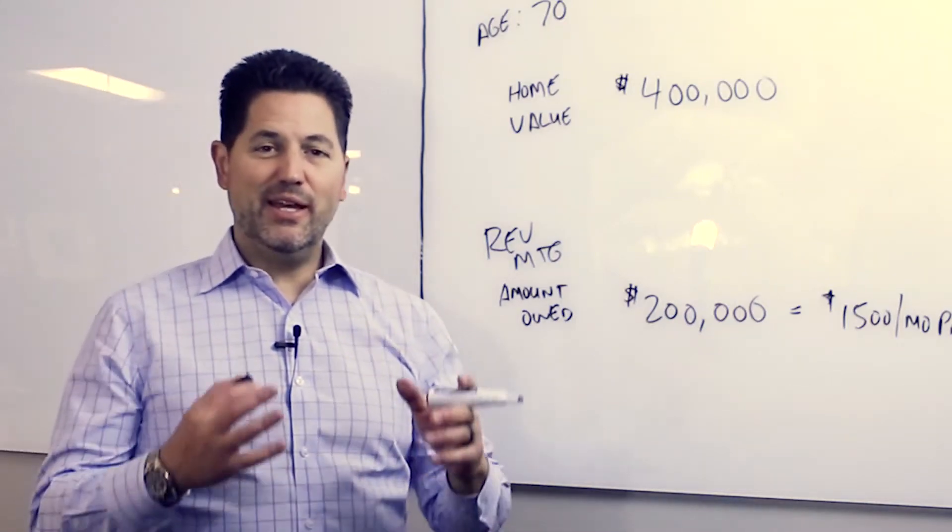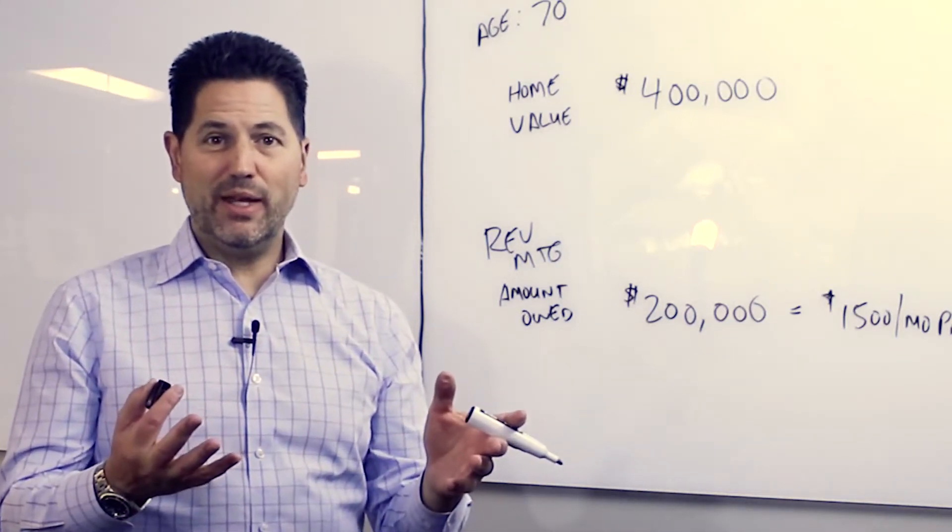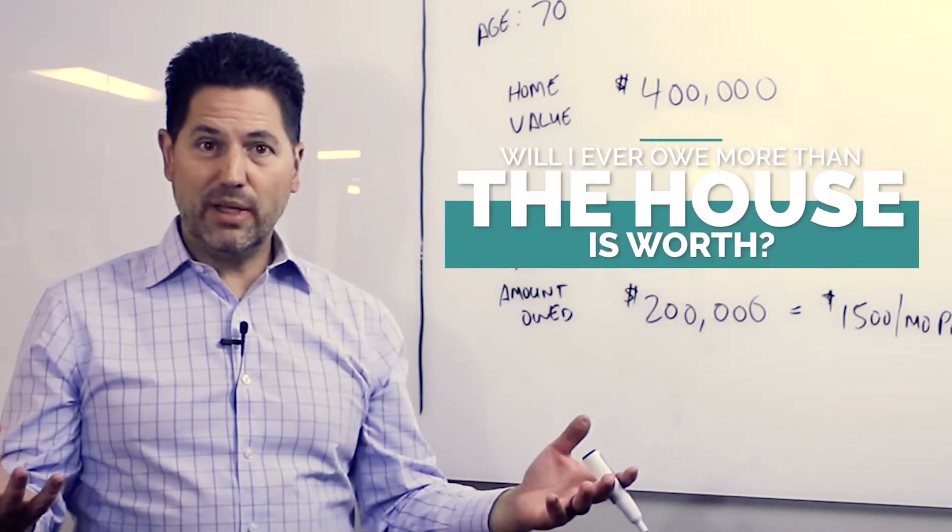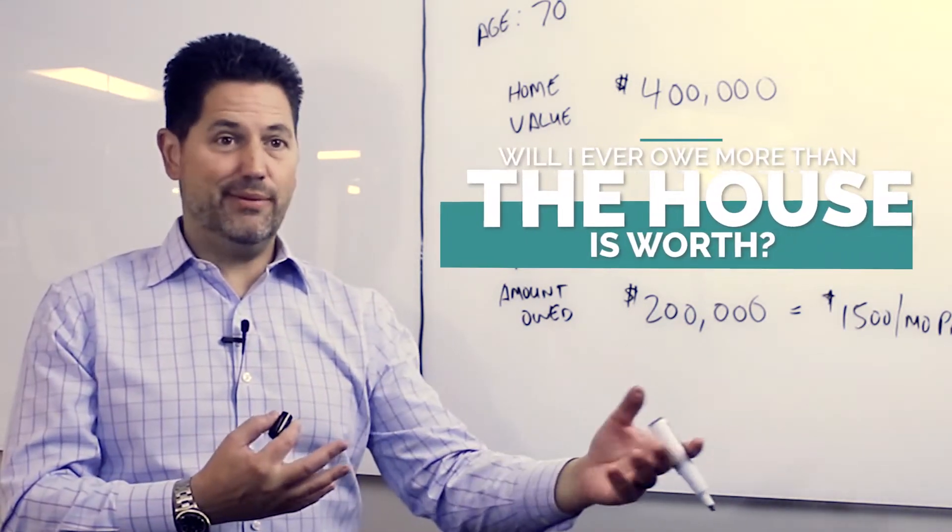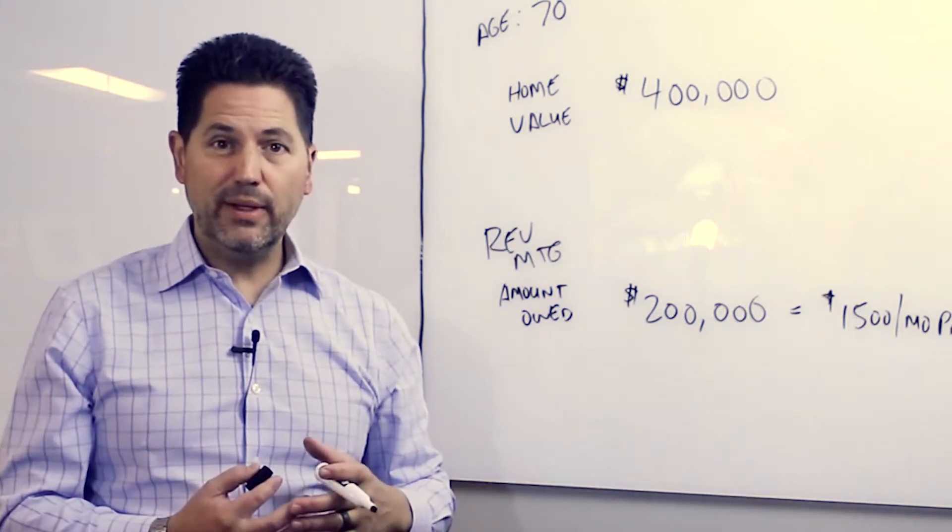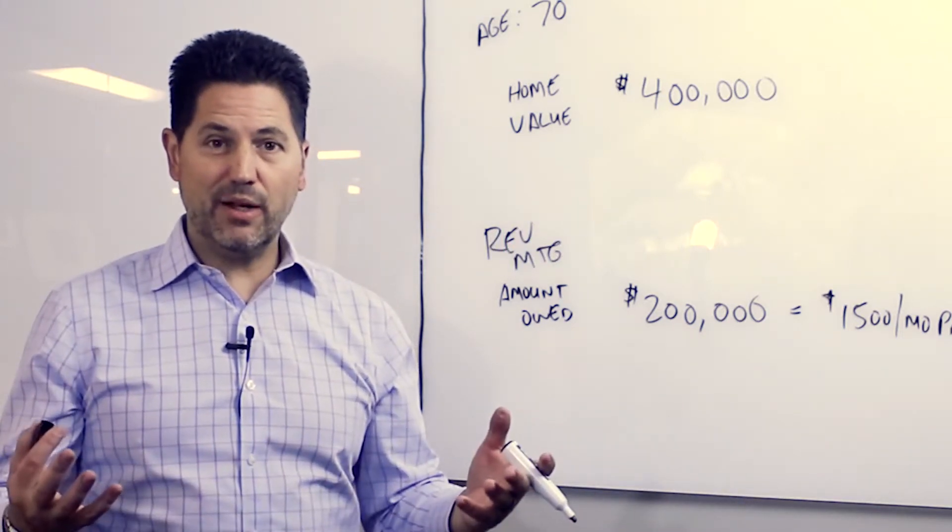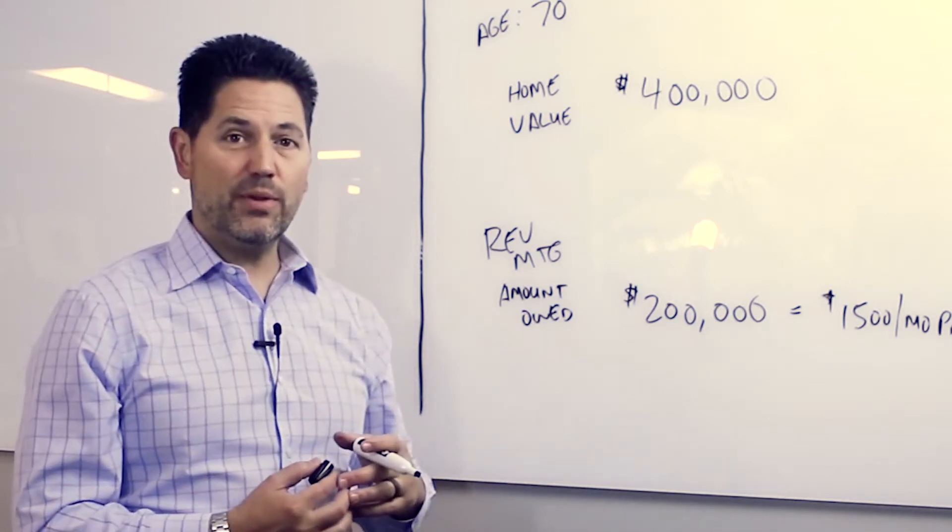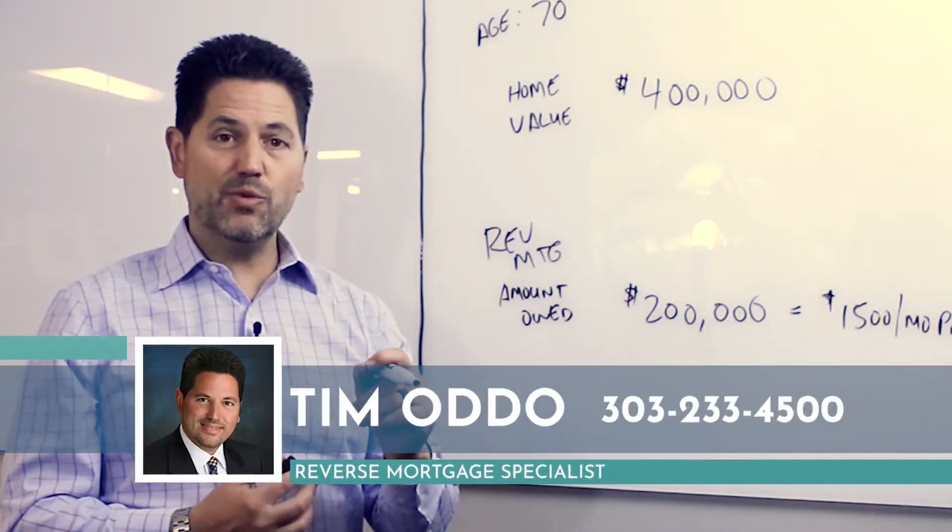So what happens if you have a reverse mortgage? Can you obtain one and then outlive the loan? Can you ever get stuck with owing more than the house is worth? Can your heirs ever get stuck with a deficiency judgment if they owe more than the home is worth? The short answer is no, and here's why.